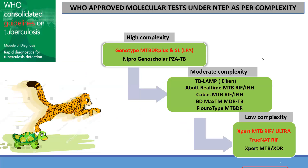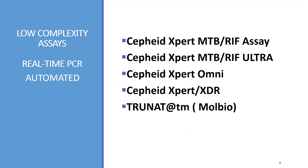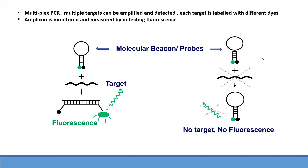Talking about the various tests, we will first discuss the lowest complexity tests — the easiest, most automated real-time tests — which include five different types: CBNAT, Expert, Ultra, Omni, Expert-XDR, and TRUNAT. All these are based on multiplex PCR. They have multiple targets which can be amplified and detected. Each target is labeled with different dyes, and the amplicon is monitored and measured by detecting fluorescence.